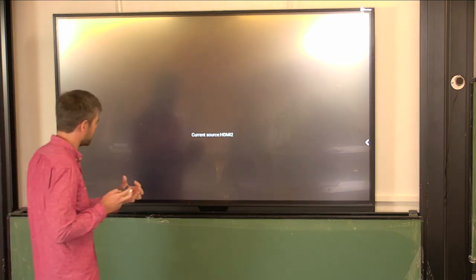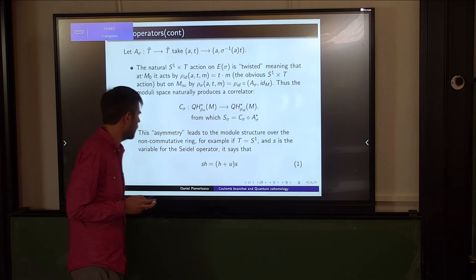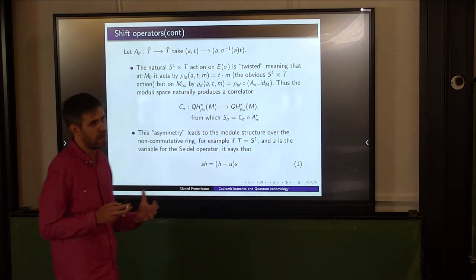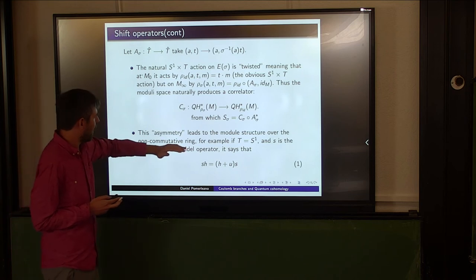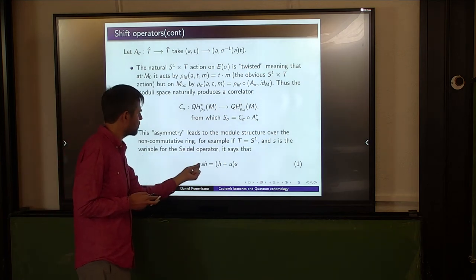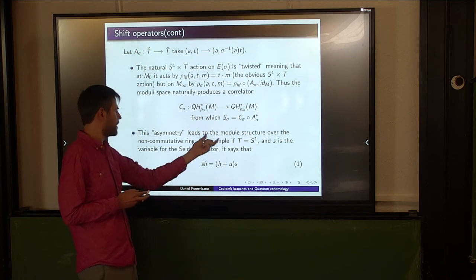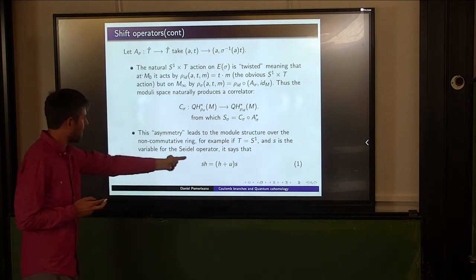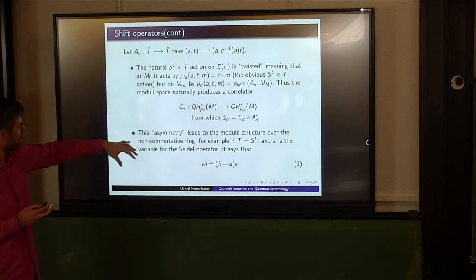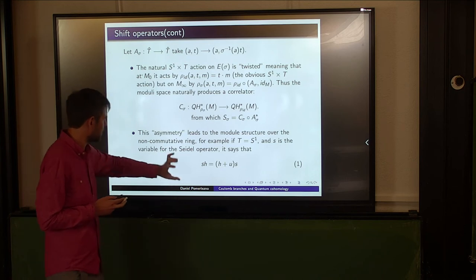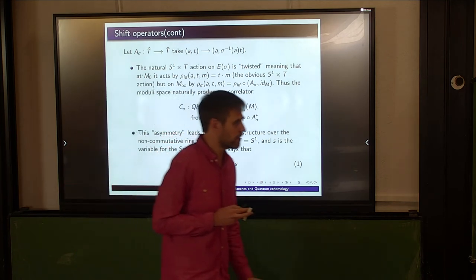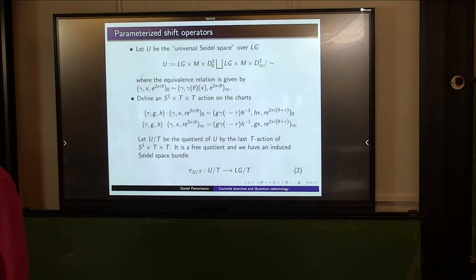This asymmetry is where you can see non-commutative algebras appearing: you get a module structure over a non-commutative ring where u is the loop rotation variable, h is the other equivariant parameter, and you get a commutation relation. You can view this ring as a subalgebra of a ring of differential operators — in general these Coulomb branches look like rings of differential operators to me.